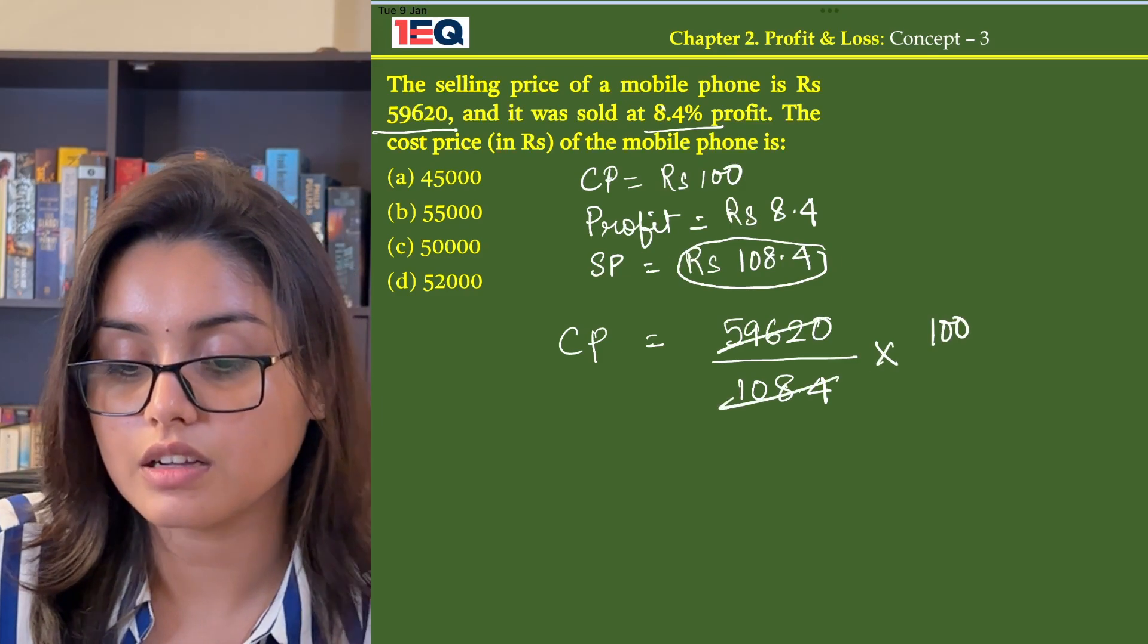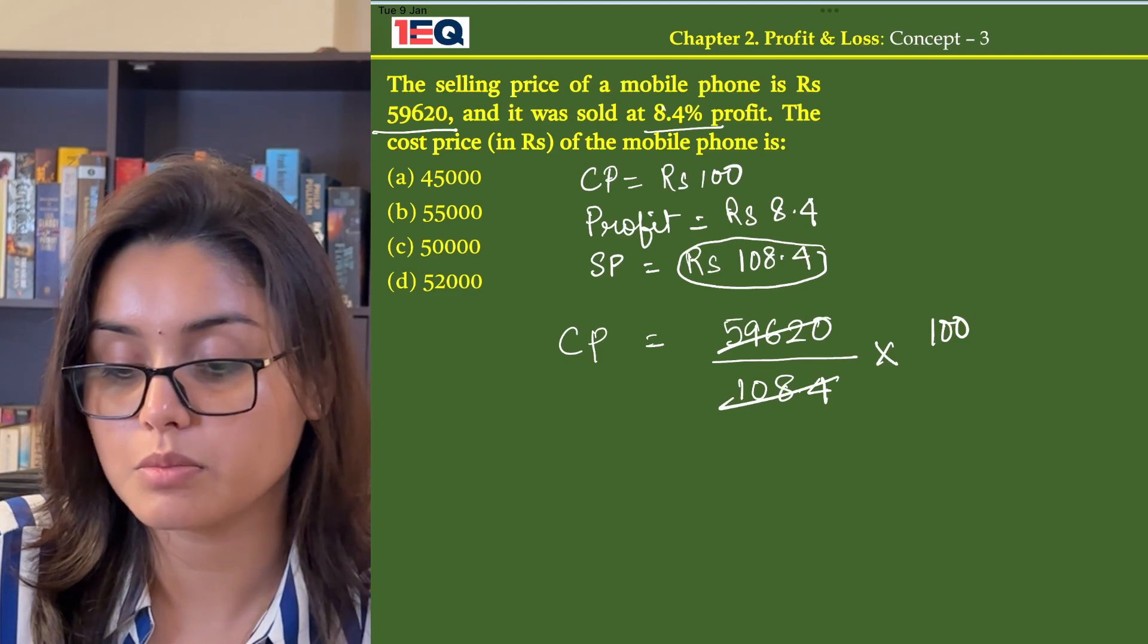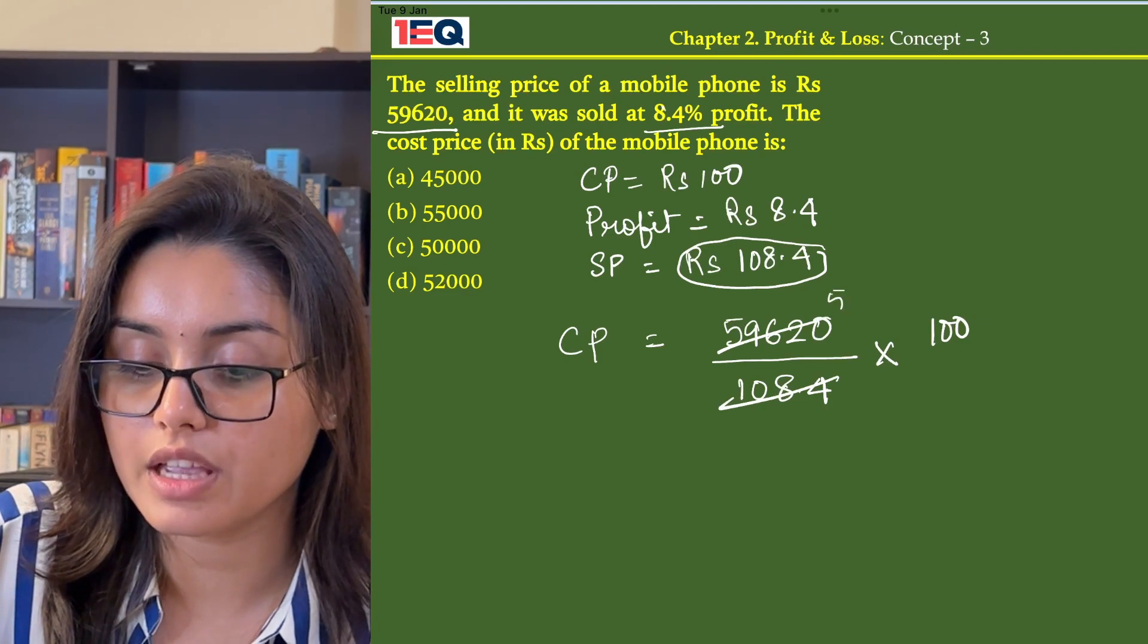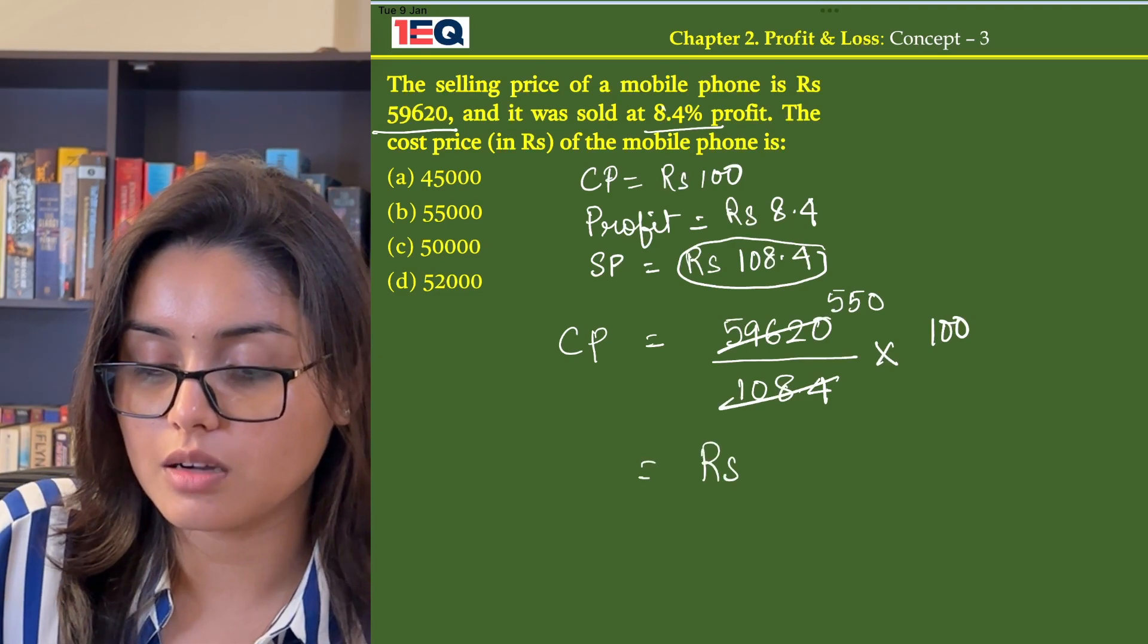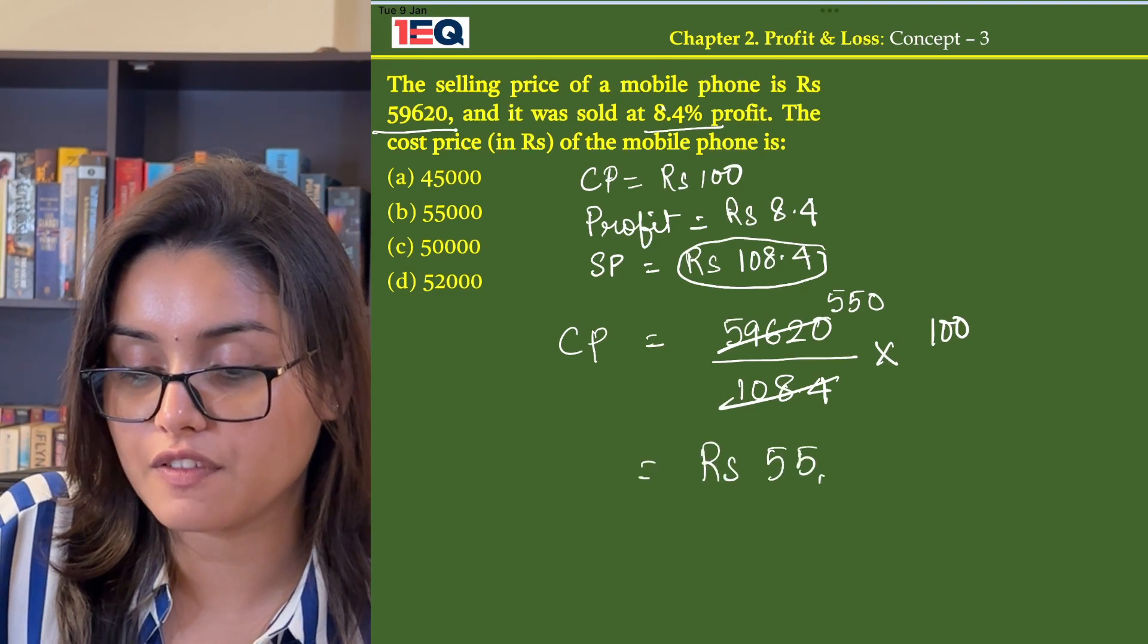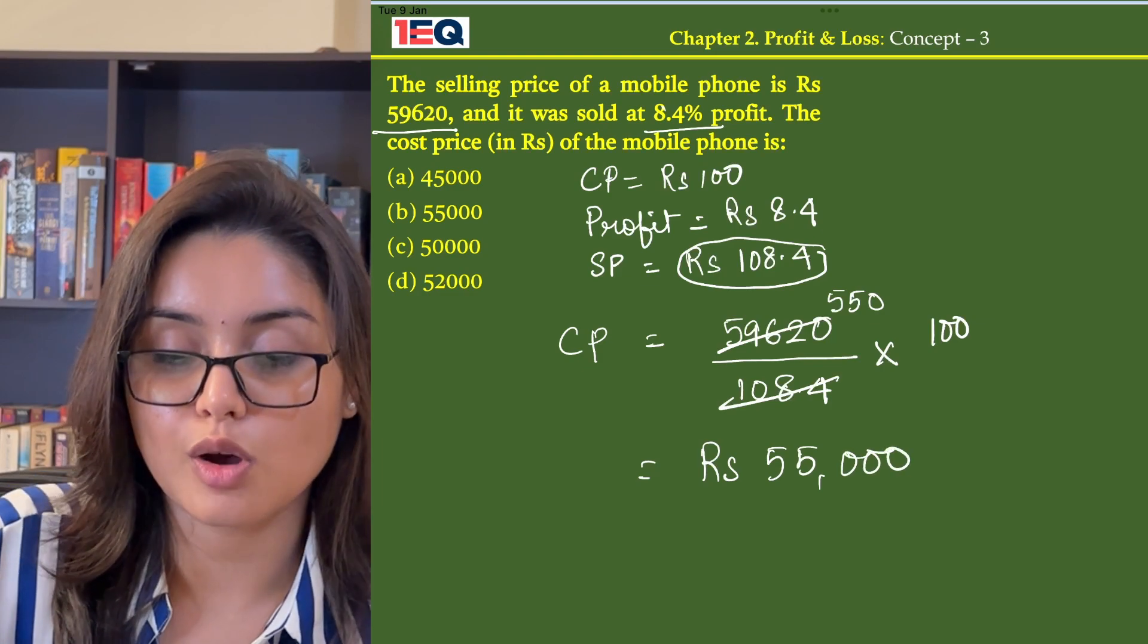On dividing Rs. 59,620 by Rs. 108.4 we get Rs. 550, and then it comes down to Rs. 55,000, which is option B.